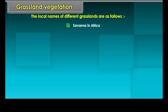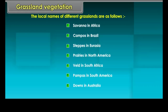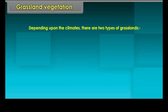Savannah in Africa, Campos in Brazil, Steppes in Eurasia, Prairies in North America, Veld in South Africa, Pampas in South America, and Downs in Australia. Depending upon the climate, there are two types of grasslands: tropical grasslands and temperate grasslands.